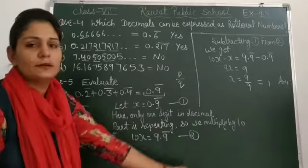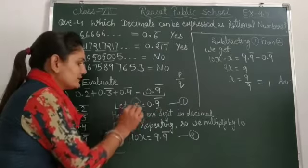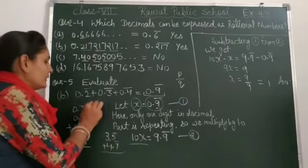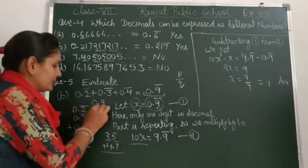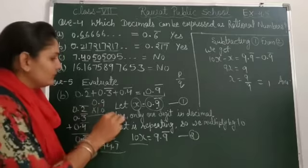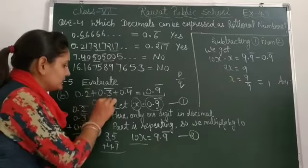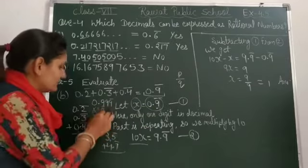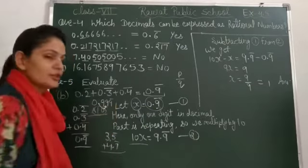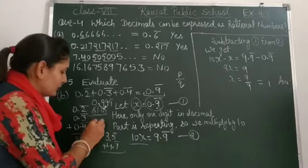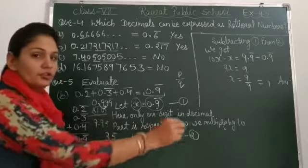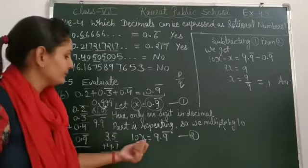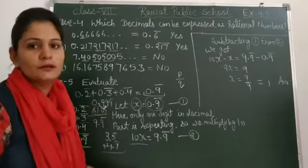When x is multiplied by 10, we will get 10x. When 0.9 bar is multiplied by 10, 0.9 bar means 9.999 going on till the end. When you multiply by 10, point shifts one value after. So this becomes 9.999 going on, or in short form 9.9 bar. So 10x equal to 9.9 bar.